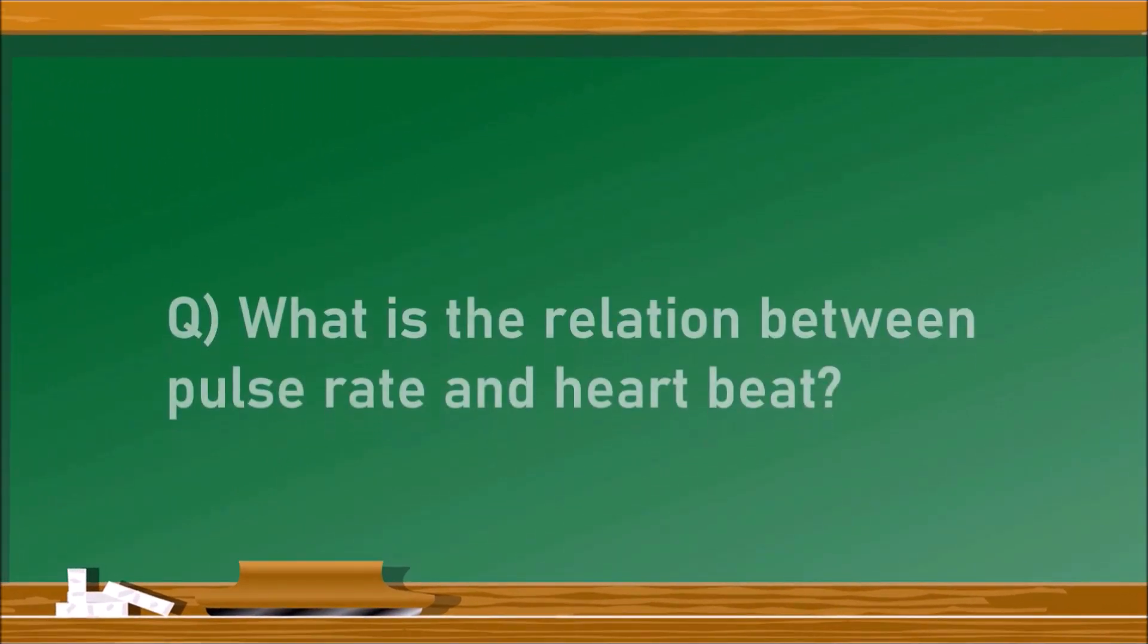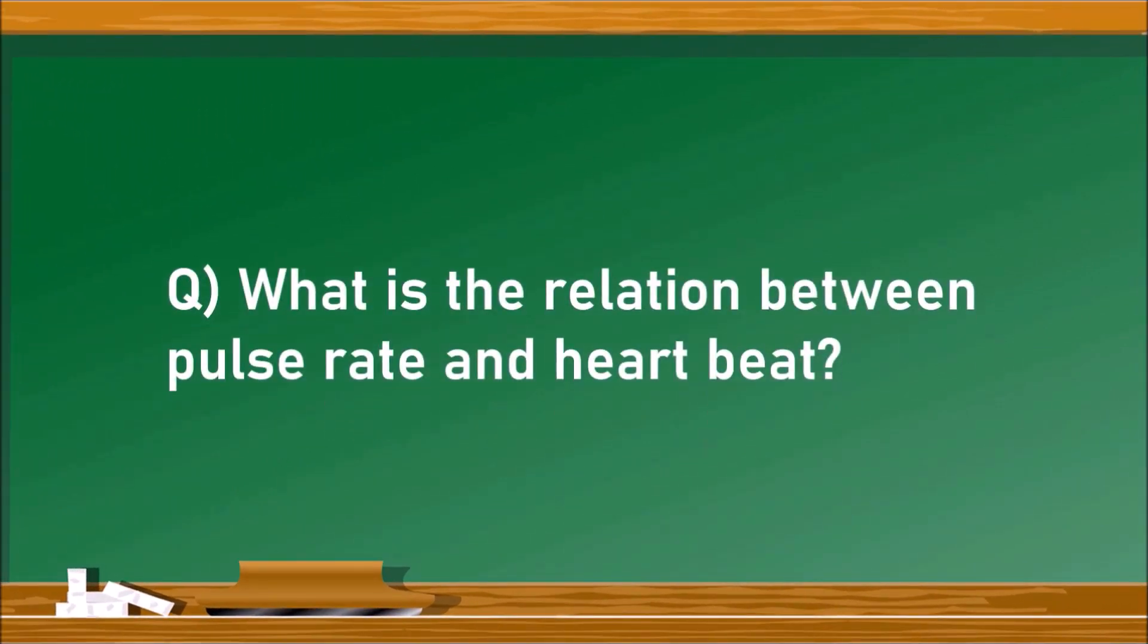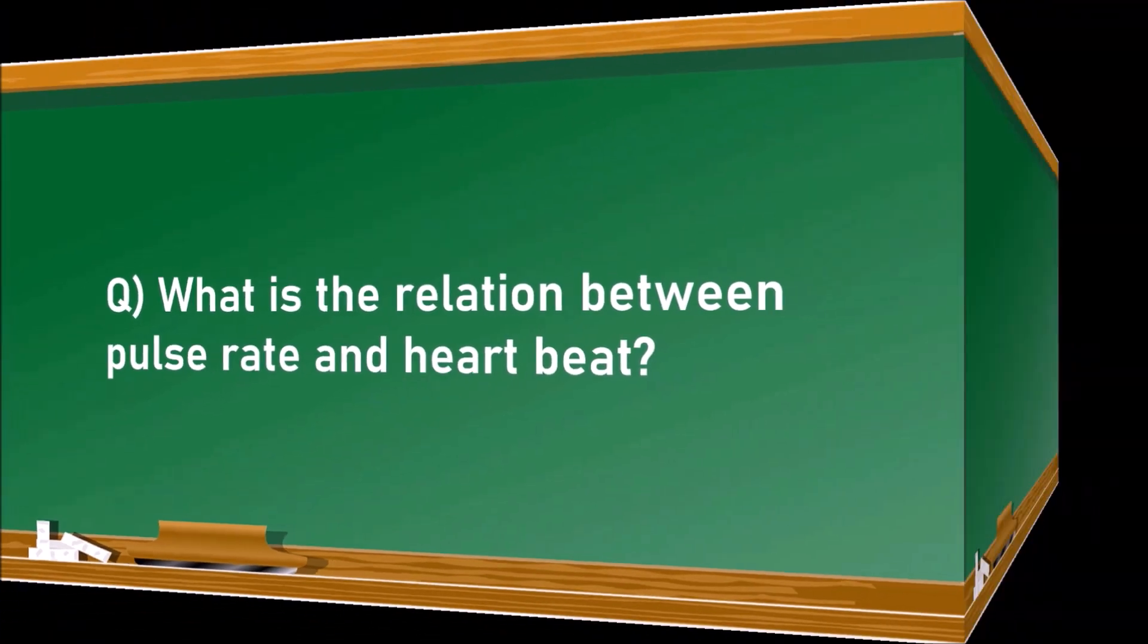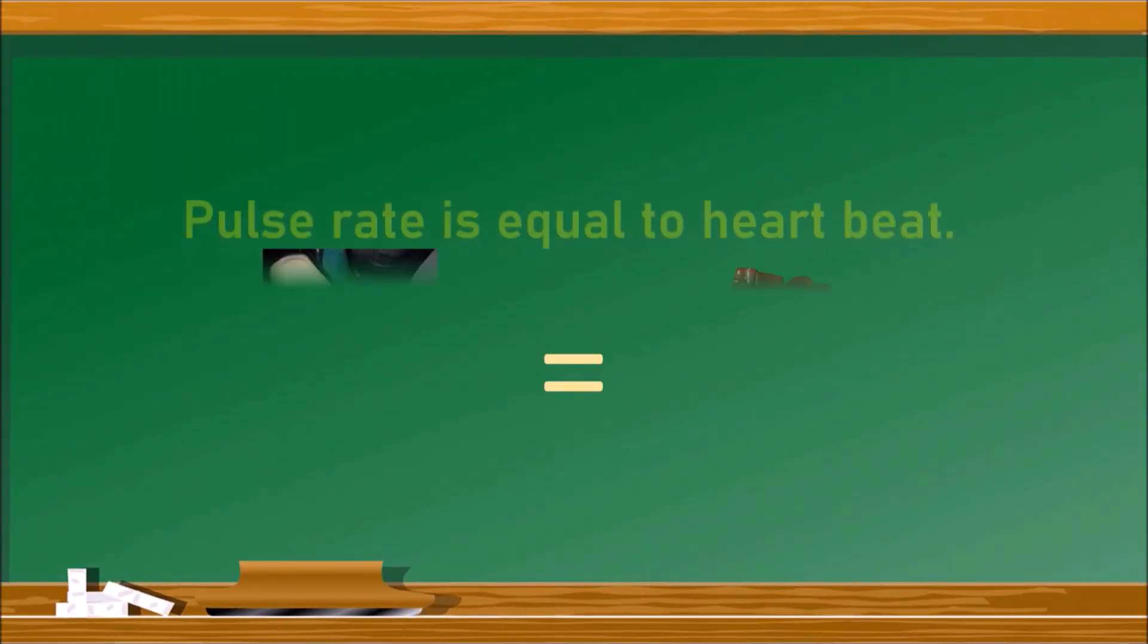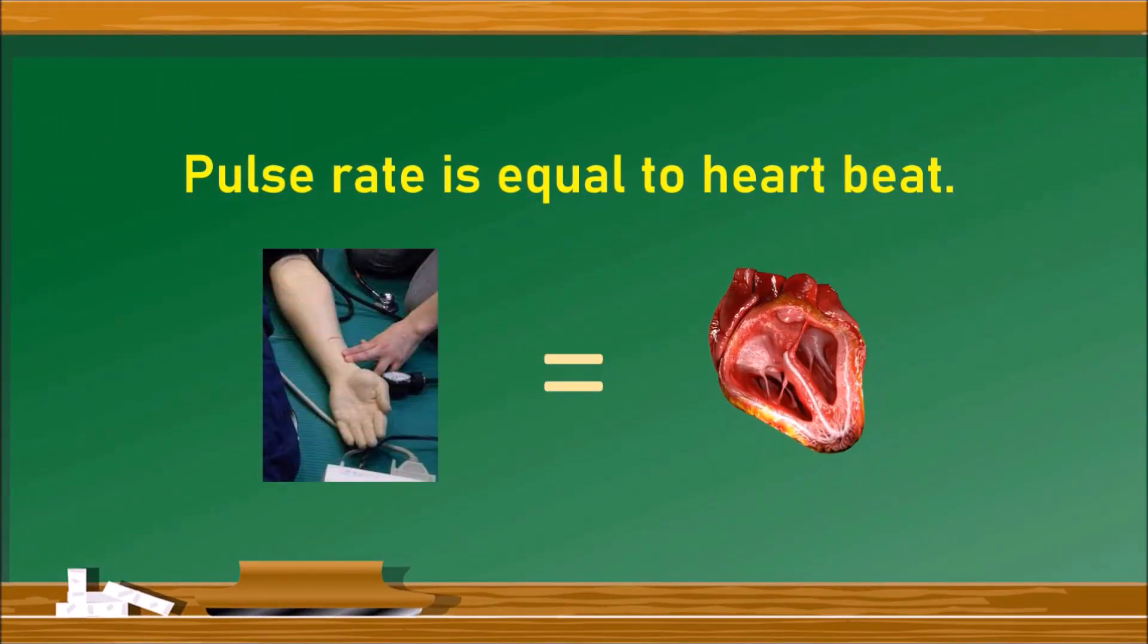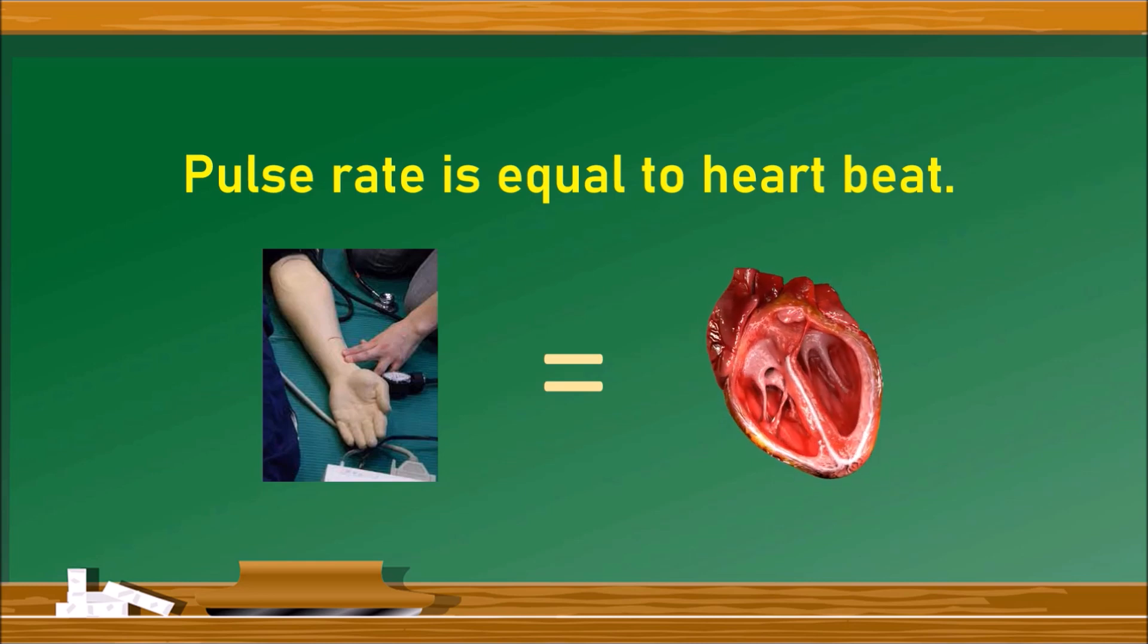The first question is what is the relation between pulse rate and heartbeat? The pulse rate is always equal to the heartbeat. The pulse rate is calculated by holding the wrist whereas the heartbeat is measured with the stethoscope.